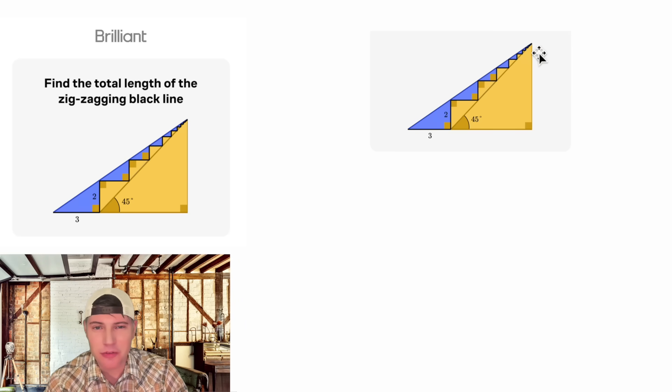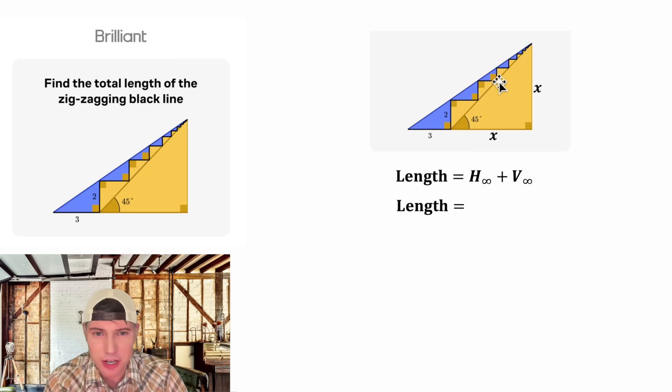They recognized this was a 45-45-90 triangle and called both of those x. And they did the same thing, the length is equal to the horizontal distances plus the vertical distances. But their method recognized that all these horizontal distances are the same thing as the base of this larger triangle or x plus three. And then all these vertical distances are the same thing as the height of this triangle or x.